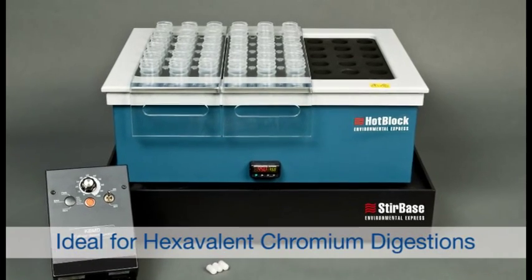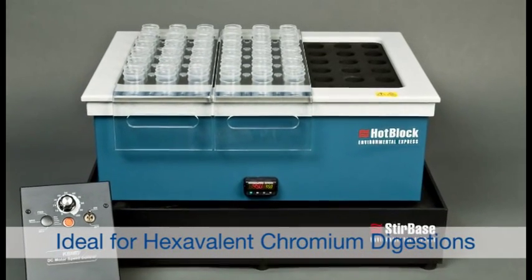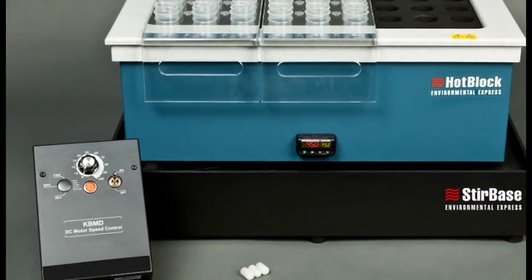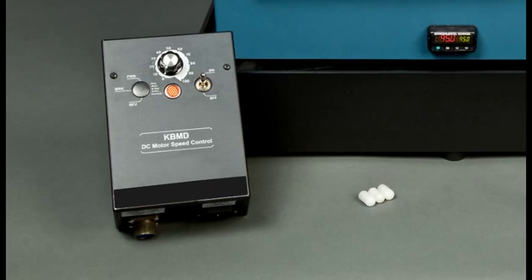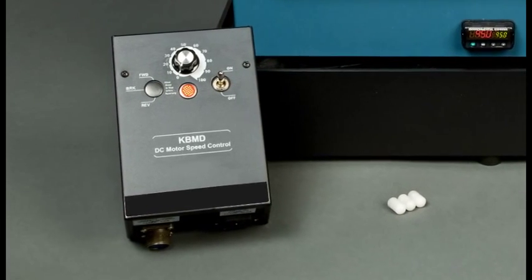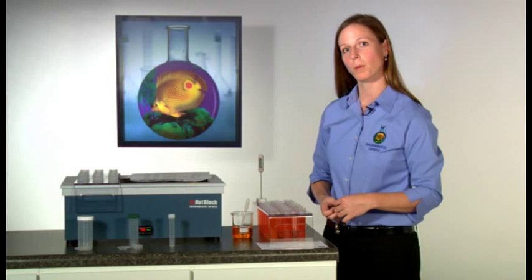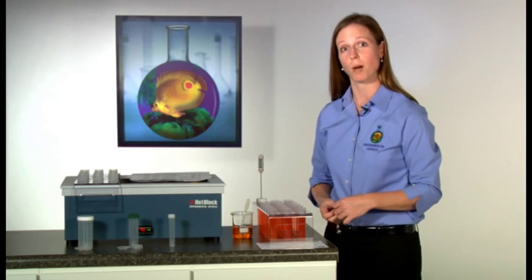The Environmental Express stir base also utilizes hot block technology while allowing constant stirring of your samples. The mixing speed is easily adjusted using the accompanying controller with a six-foot cable, eliminating the need to be inside the hood during digestions.